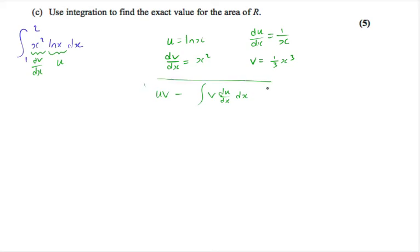Remember in this formula, our integration becomes uv, so u is ln x, v is a third x cubed. Remember, we've integrated this, so we have to have the limits of 2 and 1. Minus the integral of v, which is a third x cubed, du dx, which is 1 over x. This we can simplify to x squared, because x cubed divided by x gives us x squared. And then when we integrate x squared, we will get x cubed over 3 again.